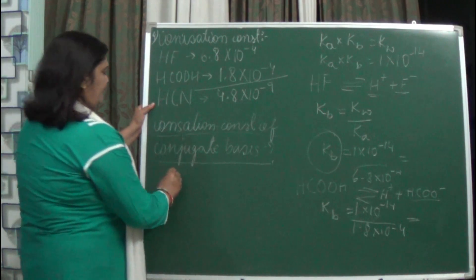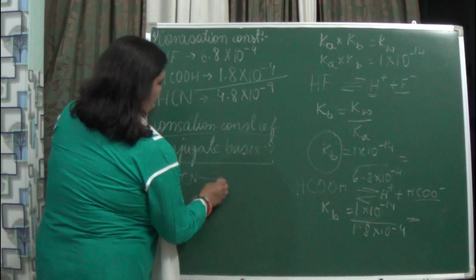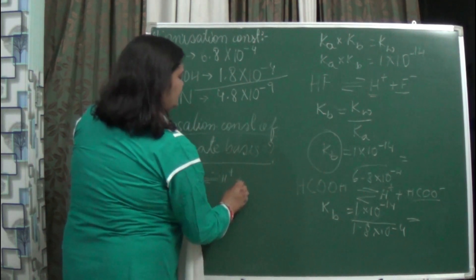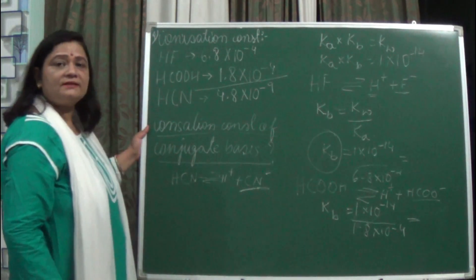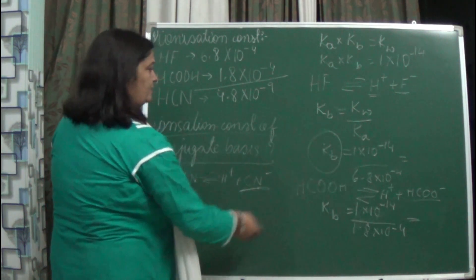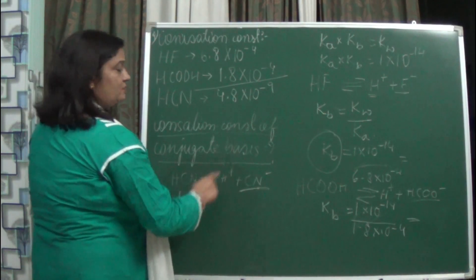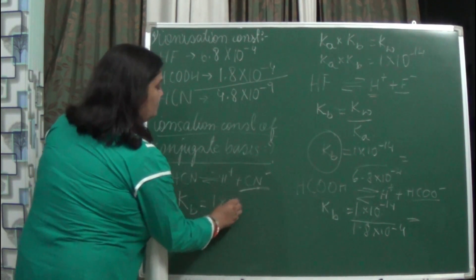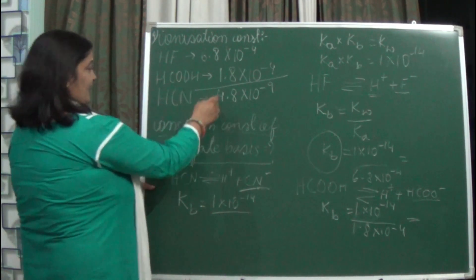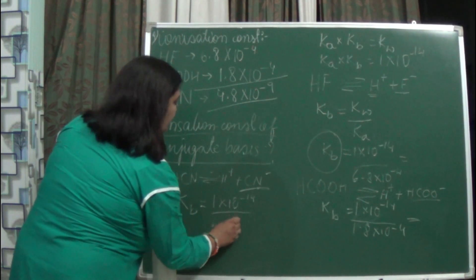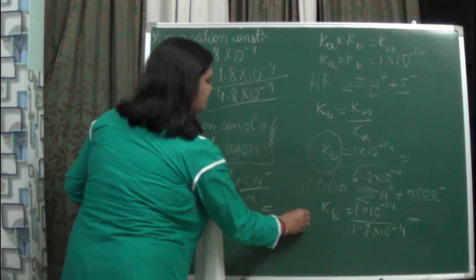Likewise, come to HCN. Write the reaction: HCN will ionize to form H⁺ ions plus CN⁻ ions. The conjugate base is CN⁻. Again apply the formula: Kb equals Kw upon Ka, which is 1 into 10 to the power minus 14 divided by 4.8 into 10 to the power minus 9. Solve it to get the answer.